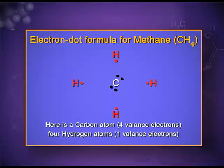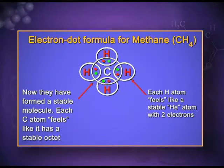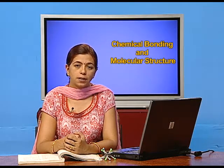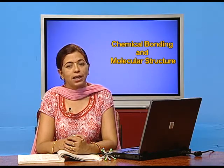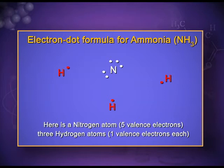Another example is methane, showing the electron dot structure for a covalent bond. Carbon has 4 electrons in the valence shell and hydrogen has 1 electron each. They form a covalent bond by sharing electrons — red dots represent the single electron of hydrogen and black dots represent the 4 electrons of carbon. By sharing, the duplet of hydrogen is completed and the octet of carbon is completed; both are in a stable state. Similarly in ammonia, nitrogen completes its octet and hydrogen completes its duplet.